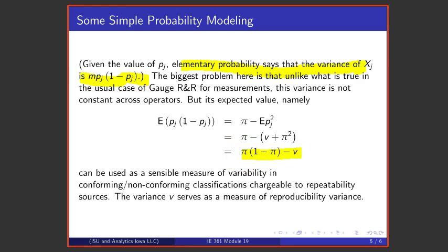The expected value of p times (1 minus p), or p_j times (1 minus p_j), is something that can be worked out in terms of π and V. It's π(1 minus π) minus V.